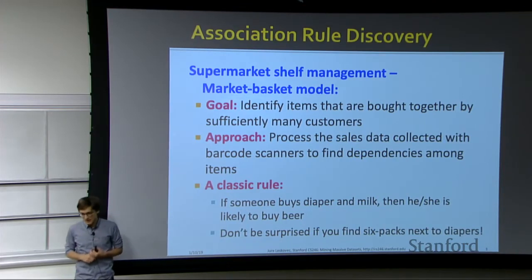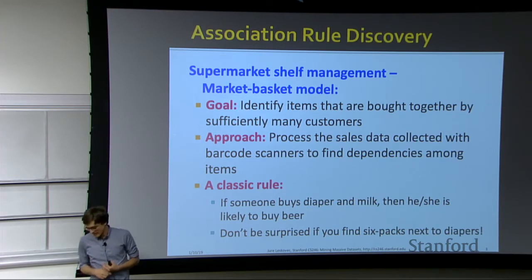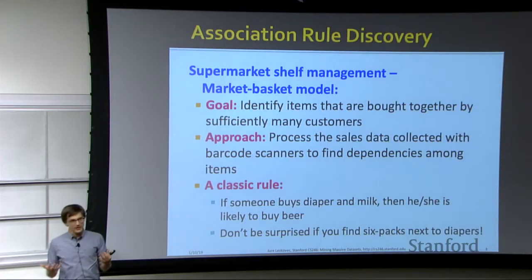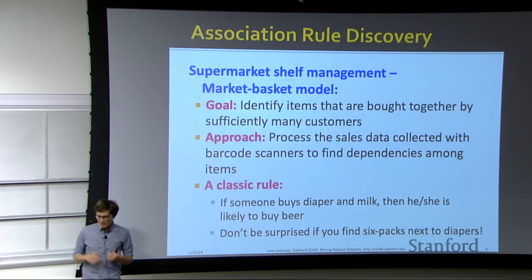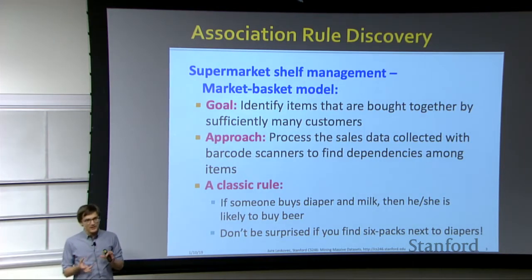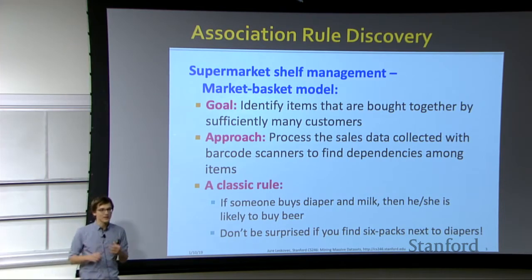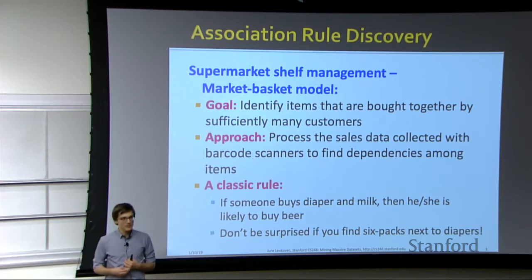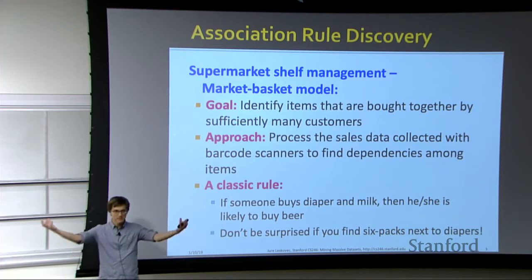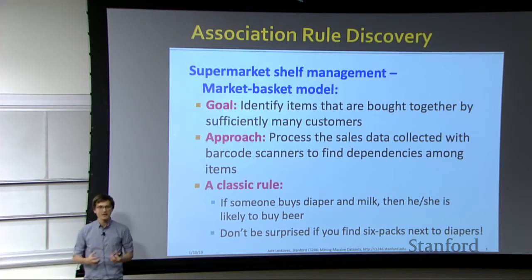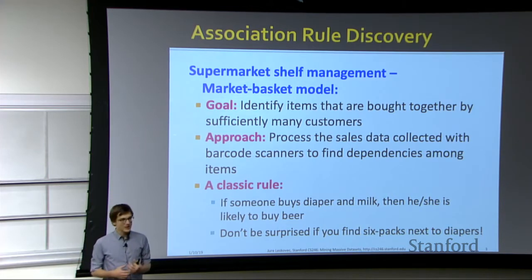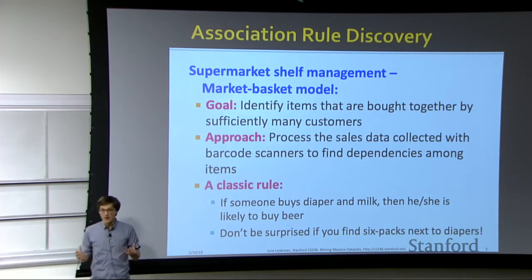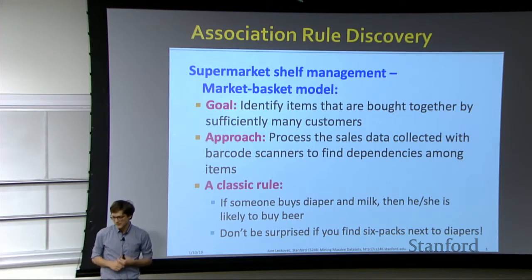Association rule discovery: the idea is that we are a supermarket and we want to manage our shelf space. We will be living in what is called the market basket model, where our goal is to identify sets of items bought together by sufficiently many customers. We can be Whole Foods in Palo Alto, Amazon.com, or a music website like Pandora or Spotify, where items would be songs collected into playlists.